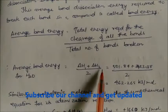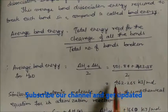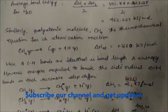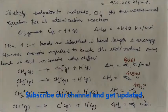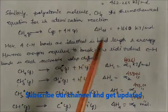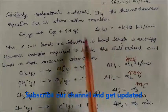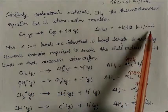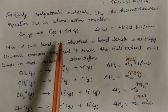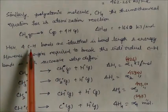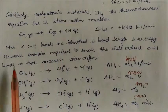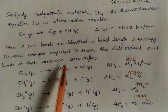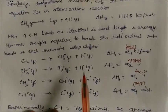For water, average bond enthalpy = (ΔH₁ + ΔH₂)/2. Similarly, for polyatomic molecules like methane, the thermochemical equation for atomization gives heat of atomization of CH₄ = 1660 kJ/mol. Methane has four identical C–H bonds in bond length and energy; however, energy required to break individual C–H bonds in each successive step is different.